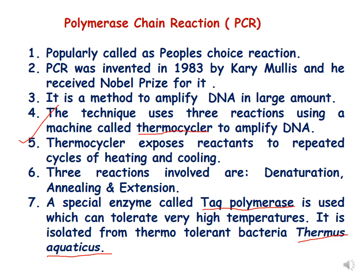PCR is a method to amplify DNA in large amounts, and this technique uses basically three reactions using a machine. The machine used for this technique is called a thermocycler, which is used to amplify DNA. The thermocycler exposes reactants to repeated cycles of heating and cooling. There are three basic reactions: denaturation, annealing, and extension.